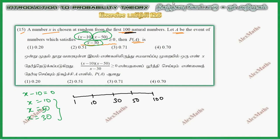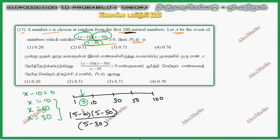In the first region, the number is greater than 0. For example, if we take x equals 5: (5 minus 10)(5 minus 50) divided by (5 minus 30). The value is negative — three negatives give less than 0, so this region satisfies the inequality greater than 0.